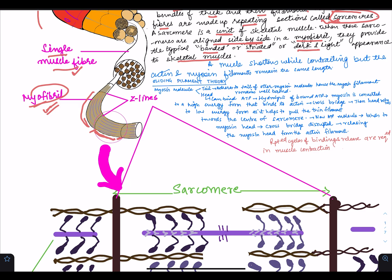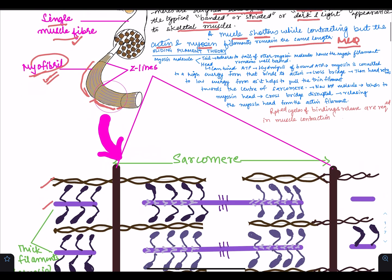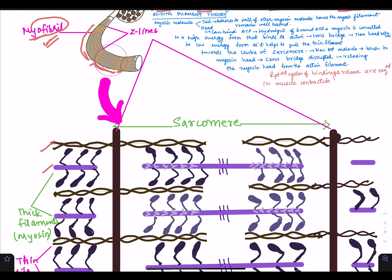A fact we must know is that the muscle shortens while contracting, but the actin and myosin filaments remain the same length. An MCQ can be asked: do actin and myosin filaments shorten or increase in size during muscle contraction? No — it is only the muscle which appears to shorten, but actin and myosin filaments remain at the same length.